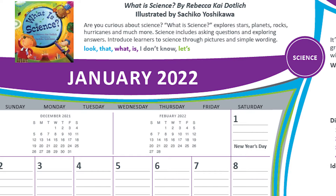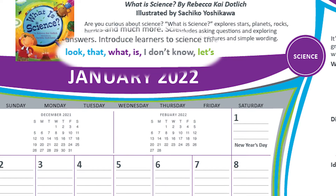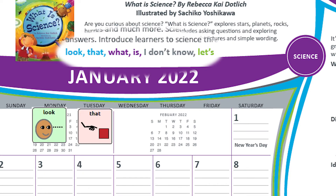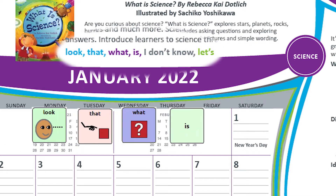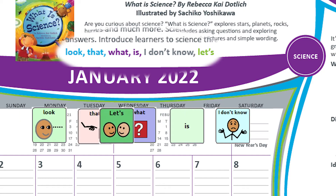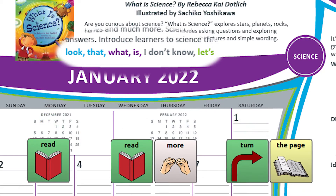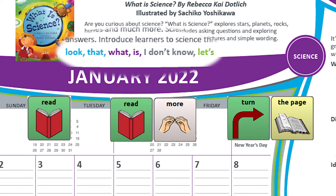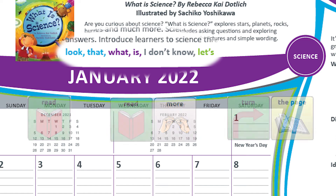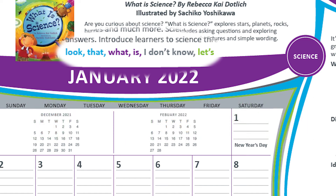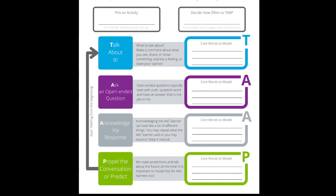The words we encourage you to model this month are: look, that, what, is, I don't know, let's, and a few others. Let's take a closer look at how to model these words and tap your way through the story.